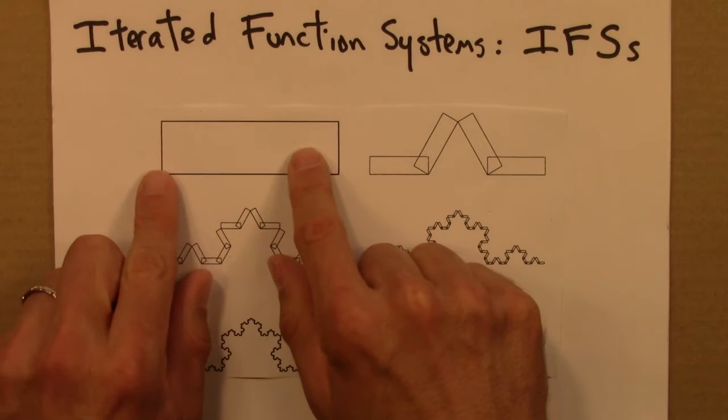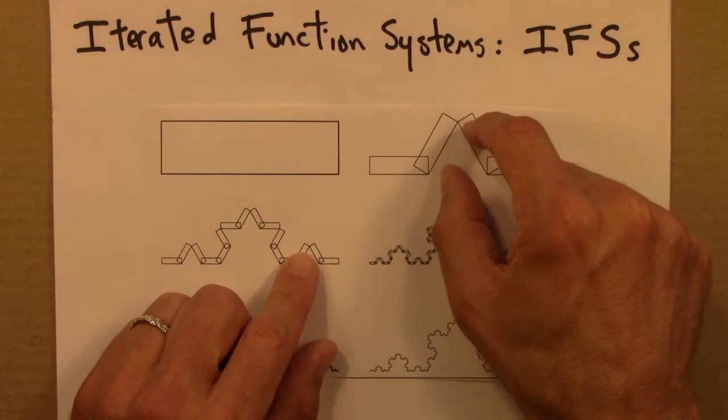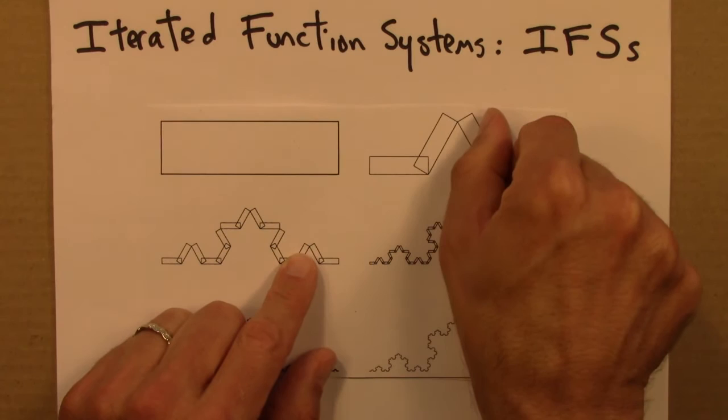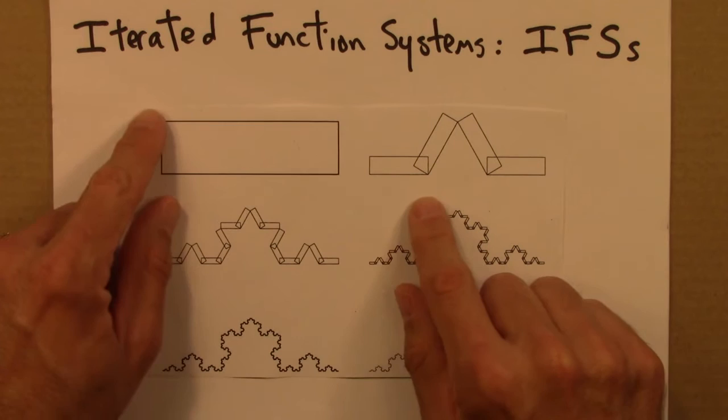This is actually four geometric transformations in one. I take a rectangle and I shrink it, put it here. A rectangle and I shrink it and put it here. These two rectangles are shrunk but then also rotated, 60 degrees this way, 60 degrees that way. Each of these geometric transformations can be described mathematically. It would be some sort of matrix operation. You would contract a certain amount in this direction, a certain amount in this direction, and then translate and if necessary rotate.